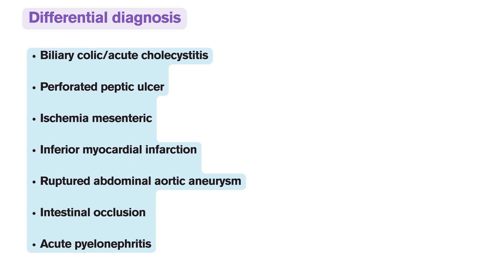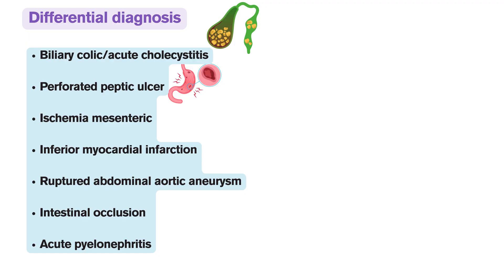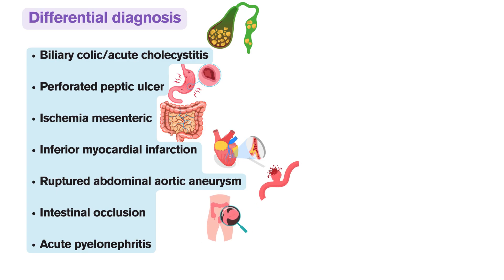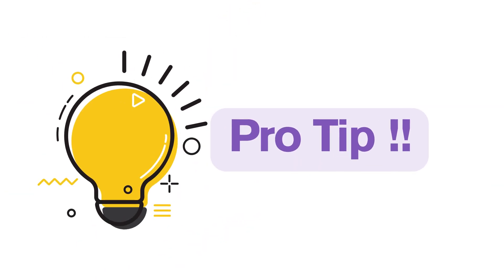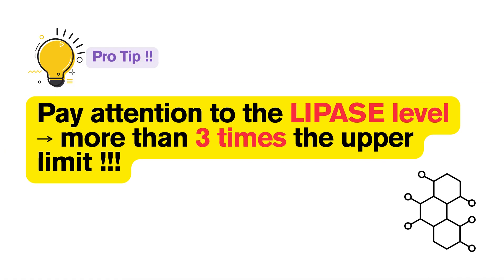Epigastric abdominal pain is a common symptom of many conditions, which makes differential diagnosis extremely important. Conditions with which acute pancreatitis can be confused include biliary colic or acute cholecystitis, perforated peptic ulcer, mesenteric ischemia, inferior myocardial infarction, ruptured abdominal aortic aneurysm, intestinal obstruction, and acute pyelonephritis. Pay close attention to amylase and lipase levels: even other conditions can cause increases in pancreatic enzymes, though usually not three times the upper limit of normal.